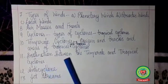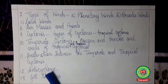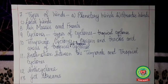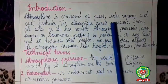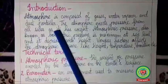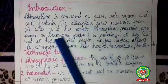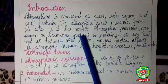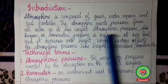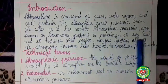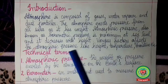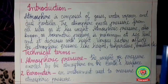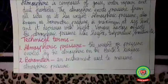We will also study distinction between temperate cyclones and tropical cyclones, anticyclone, and jet streams. The atmosphere is composed of gases, water vapor, and dust particles. The atmosphere exerts pressure from all sides on our surface as it has weight. Atmospheric pressure, also known as barometric pressure, is maximum at sea level and decreases with height. Various factors affect atmospheric pressure like height, temperature, and moisture, which we'll discuss in today's class.